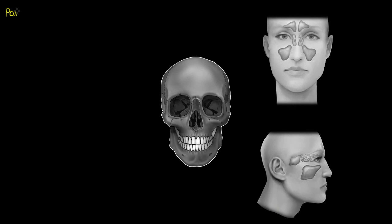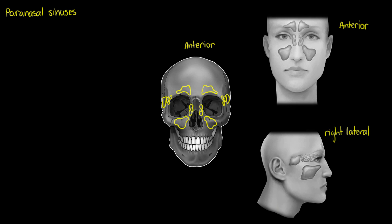Welcome to this tutorial on our paranasal sinuses, named paranasal due to them running alongside our nasal cavity. Before we get started learning about the sinuses, let's sort out our directional terminology. We have an anterior view of our skull as well as an anterior view of our head, with the sinuses shown outlined, and a right lateral view of our head as well. I'll show up quickly here all the sinuses that we would see in our skull.